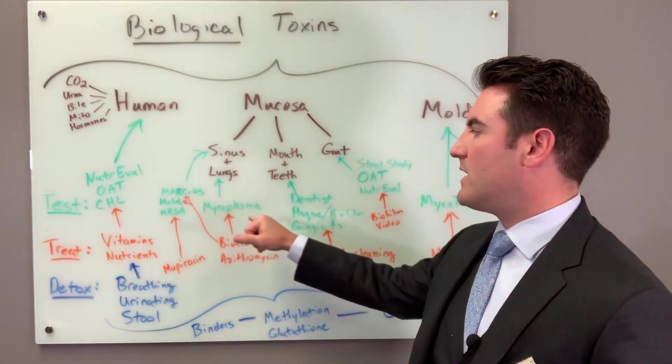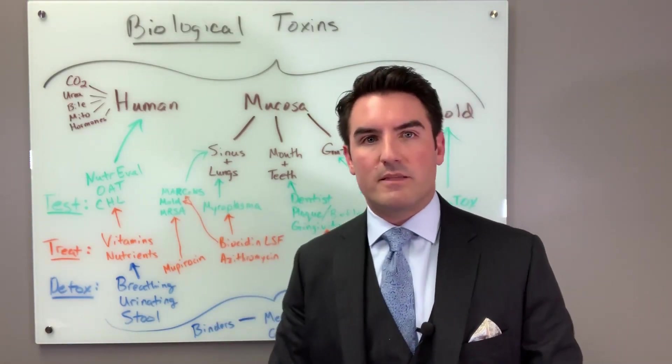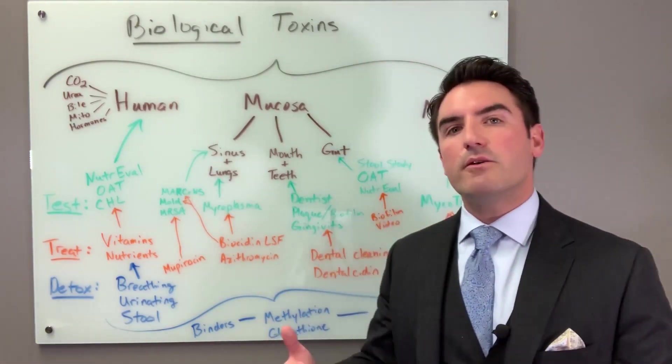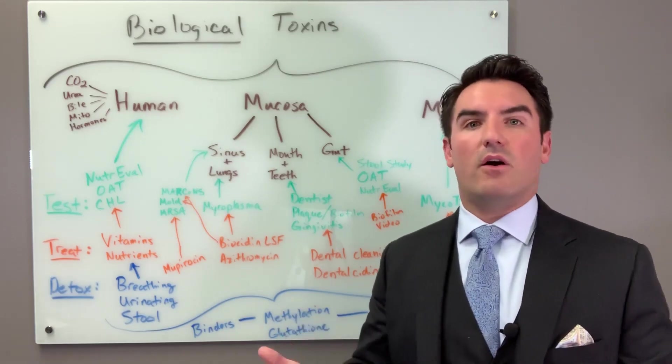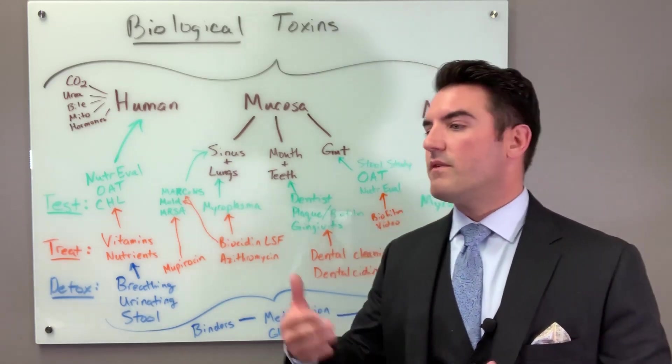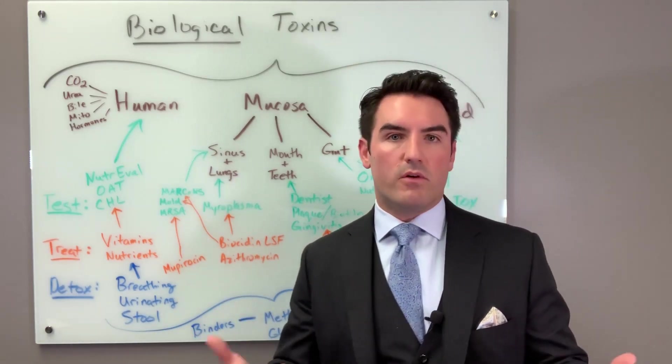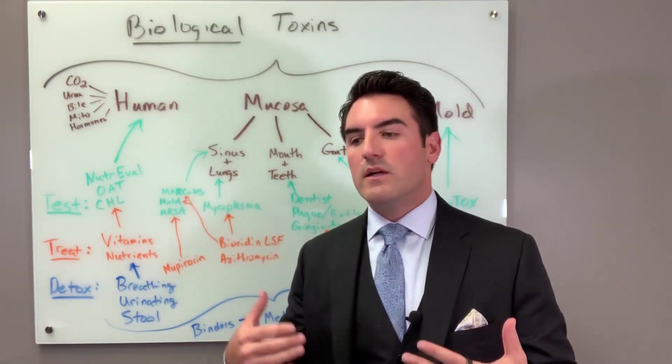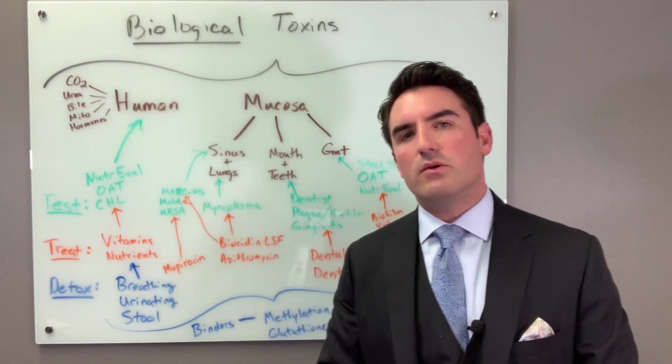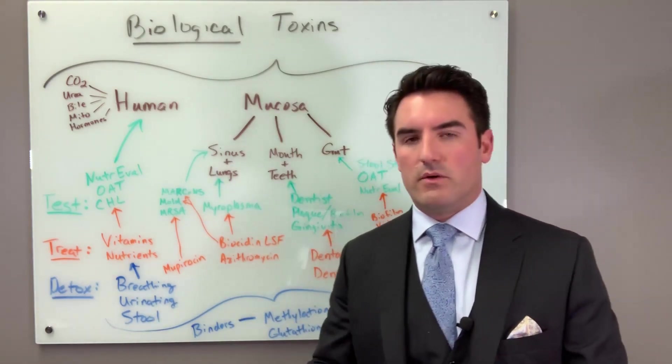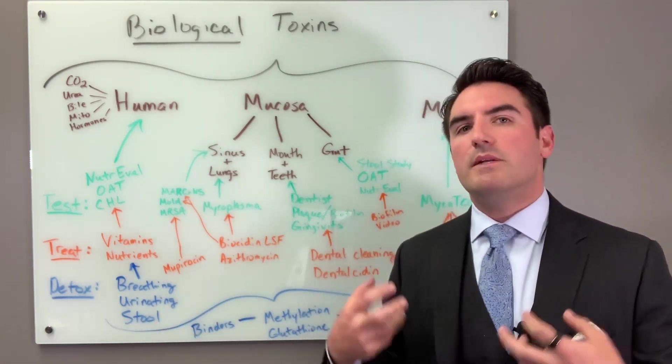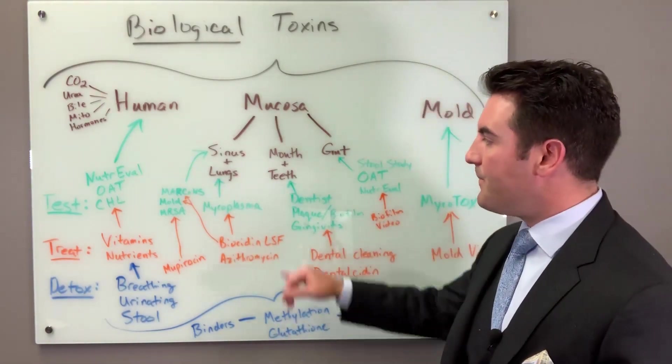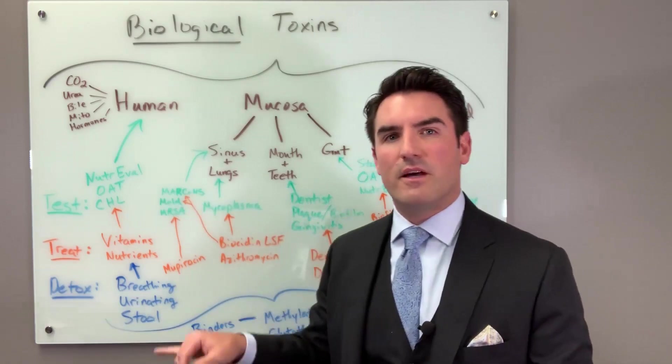So this mycoplasma bacteria frequently is the cause of walking pneumonia. So if you've ever known someone who's had walking pneumonia, ever heard of walking pneumonia, this is one of the common culprits of walking pneumonia. The problem is that after your walking pneumonia, you can actually have a chronic pneumonia. So it could have been a cough or cold that passed, no big deal, but now you're growing this mycoplasma in your respiratory tract and you can't seem to get rid of it. So mycoplasma can be a tough little guy.